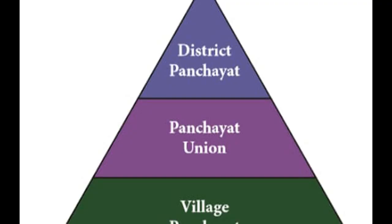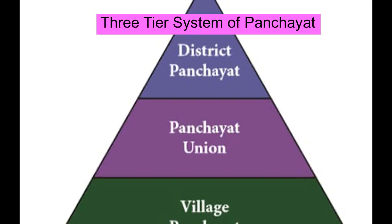Important features of the 73rd and 74th Constitutional Amendment Acts: First, Panchayats and municipalities will be the institutions of self-government. Second, Grama Sabhas in villages and ward committees in municipalities are included in local self-government.